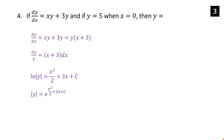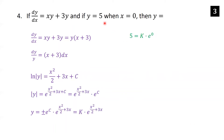Exponentiating each side, we have absolute y on the left and e to the x squared over 2 plus 3x plus c on the right. Using rules of exponents, we rewrite the right-hand side as e to the x squared over 2 plus 3x times e to the c. So y equals plus or minus e to the c times e to the x squared over 2 plus 3x, which we write as k times e to the x squared over 2 plus 3x — plus or minus e to the c is just a constant we call k. Using the initial condition y equals 5 when x equals 0, we plug in 5 for y and 0 for x: 5 equals k times e to the 0, which is 1, so k equals 5. Therefore y equals 5 times e to the x squared over 2 plus 3x.